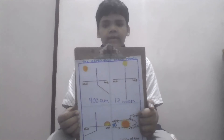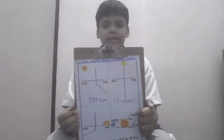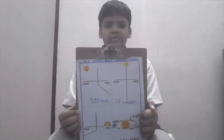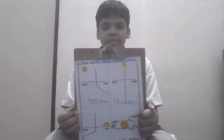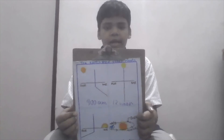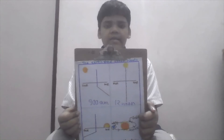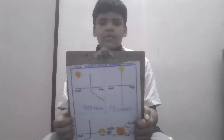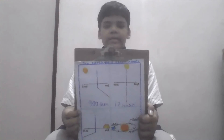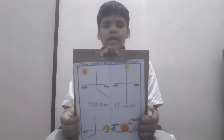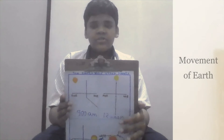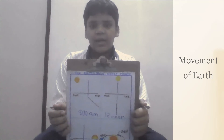In the morning, when the sun rises in the eastern sky, the shadow on the ground points towards the west. At noon, the sun is above our head and the shadow is directly below. By evening, the sun goes down in the western sky and the shadow points towards the east.